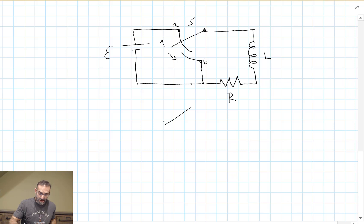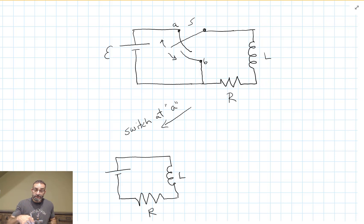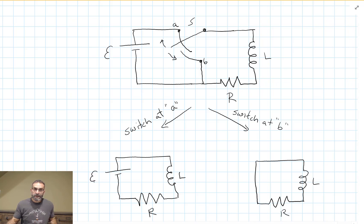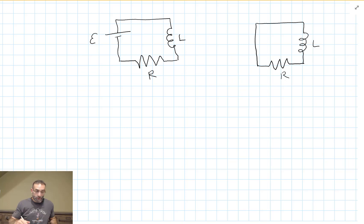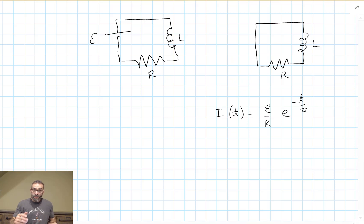When the switch is at position A, the circuit looks something like this. When the switch is turned to B, we've effectively removed the battery from the circuit. Let's take a look at what happens when we remove the battery. We can do our loop rule again, and what we end up with this time is that the current in the circuit as a function of time is some maximum value times e to the minus T over tau.